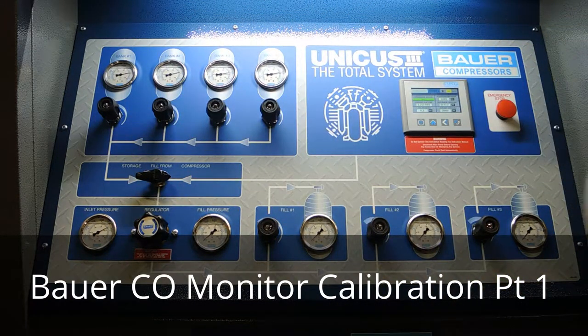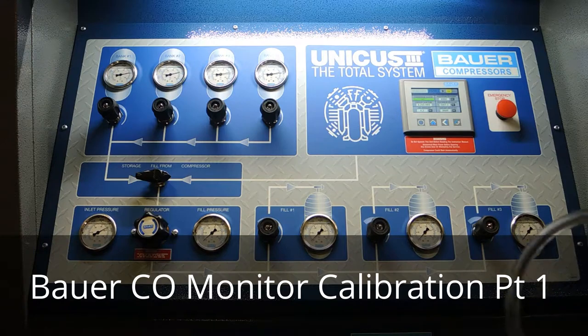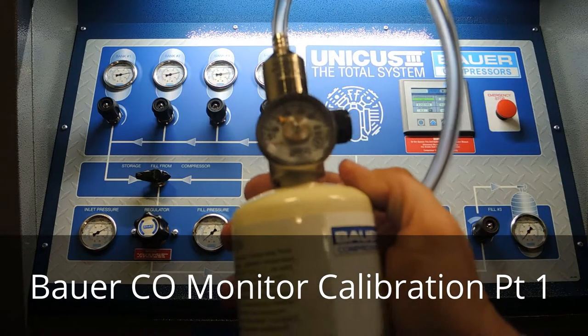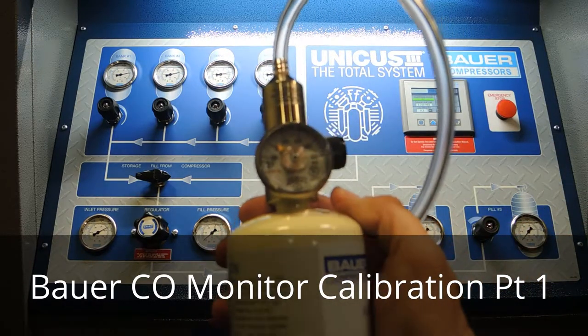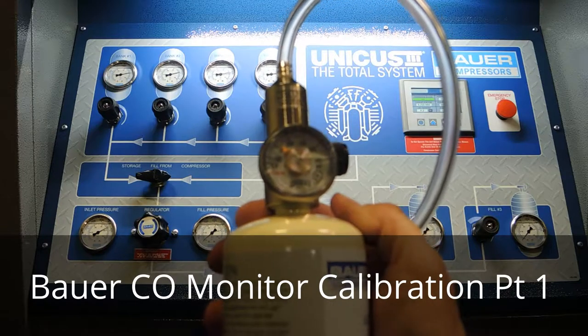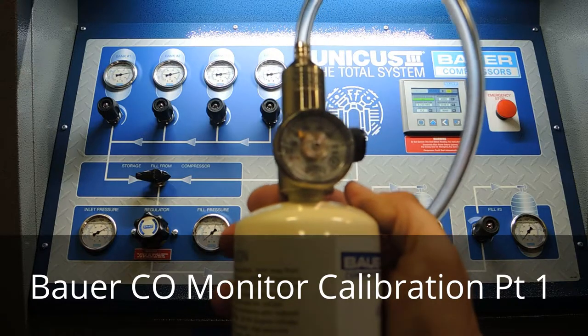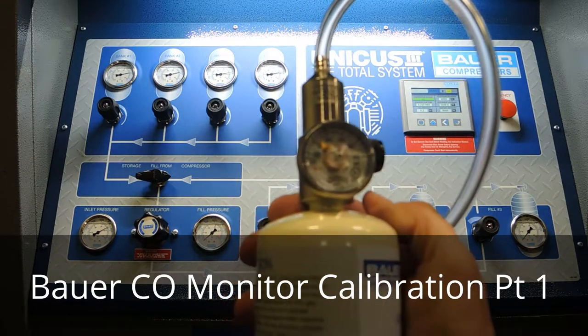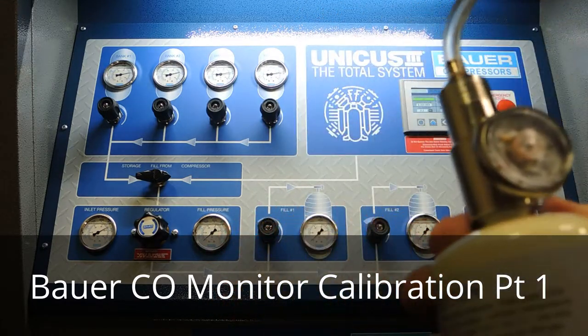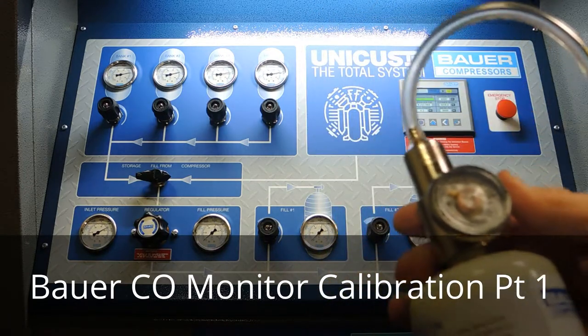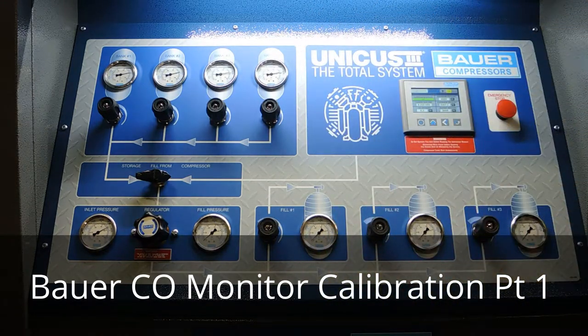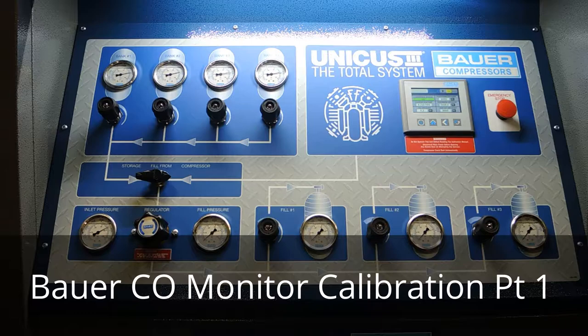A good thing to check before you do your calibration is to make sure that each of the test gases has air or CO calibration gas in the bottle. Go ahead and put your regulator on those cylinders and make sure that you do have pressure in there before you start the calibration procedure.